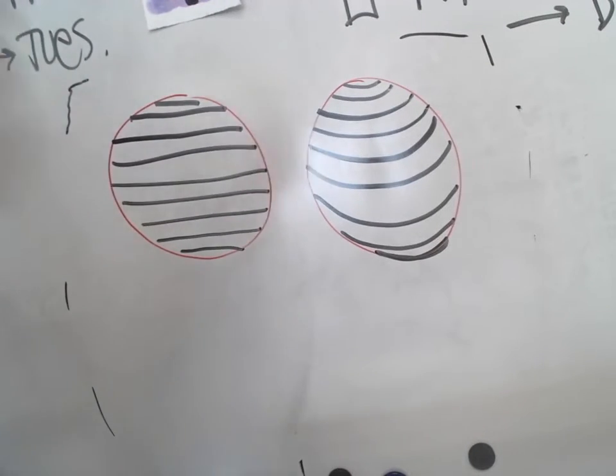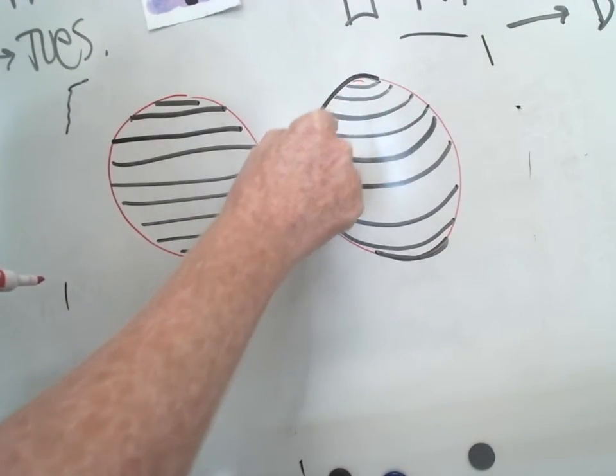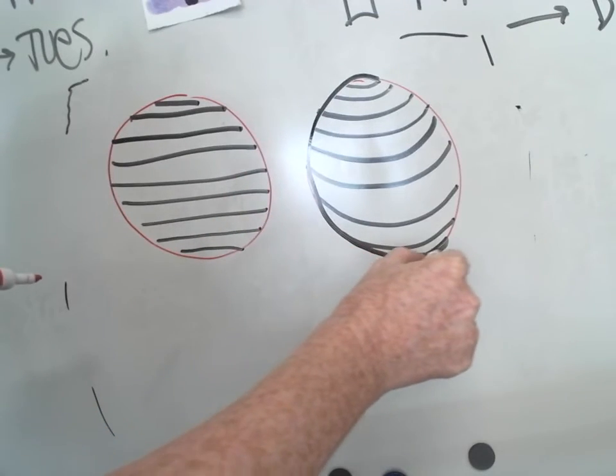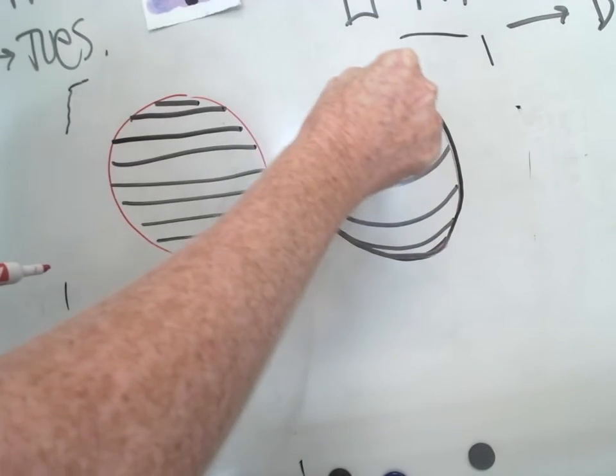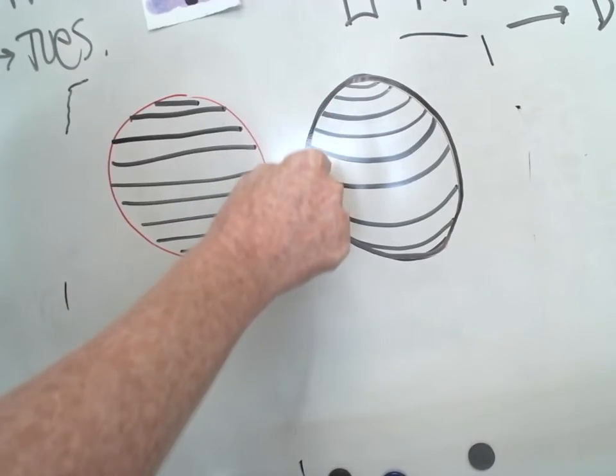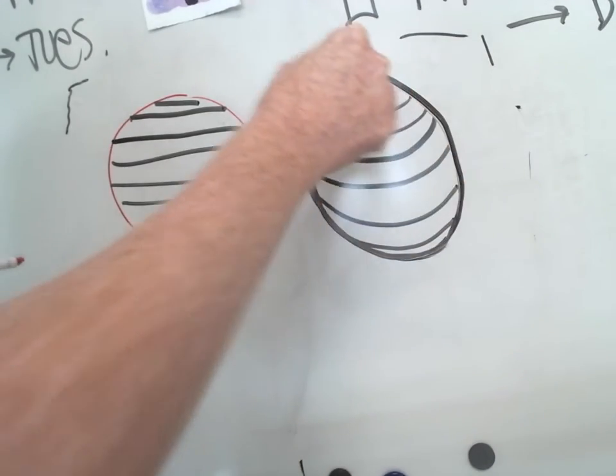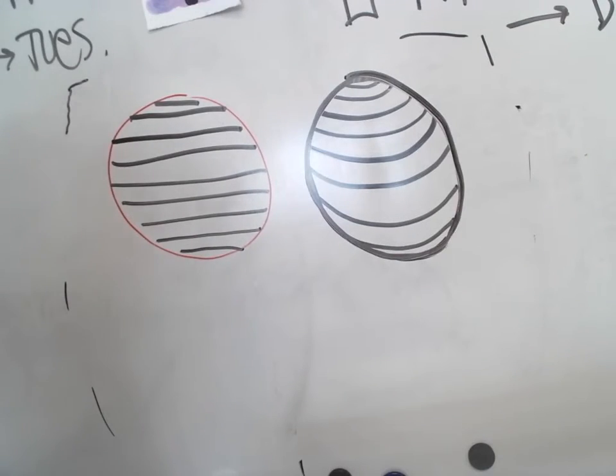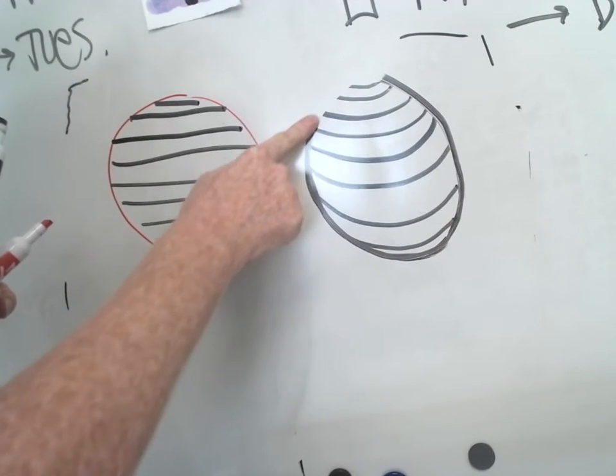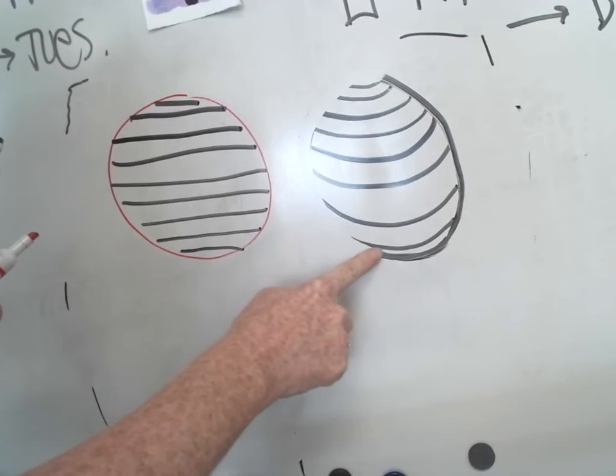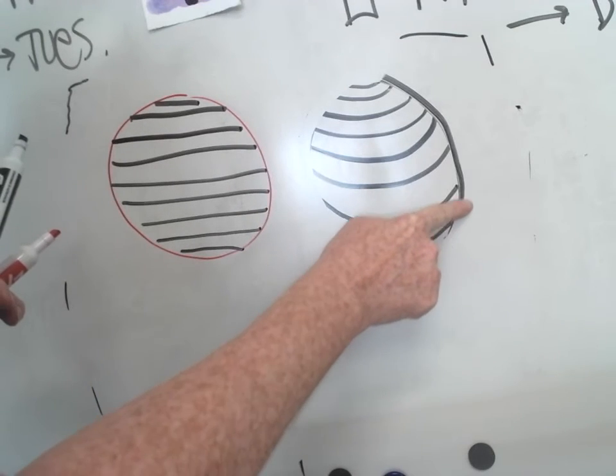Next thing we talked about is no outline. Don't take your black Sharpie and do this. In real life, real objects do not have a black outline around them. When you put a black outline around an object it flattens it, it looks like a cartoon now.